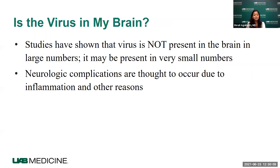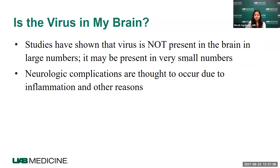Another question often asked is: does this mean the virus — SARS-CoV-2 — is residing permanently in my brain? Studies have shown that the virus is actually not present in the brain in any large or meaningful numbers. It definitely tends to go into your respiratory system and lungs. If it has been identified in the brain, it is in very small, minuscule amounts. We don't think the virus itself is causing damage in the brain. We really think the neurologic complications are occurring primarily because of inflammation related to the virus — not because of the virus itself residing in the brain.